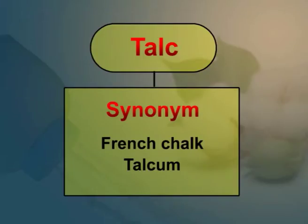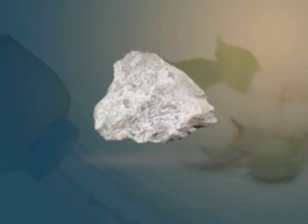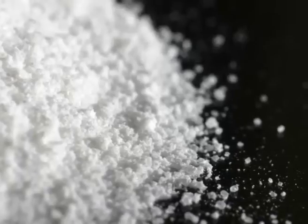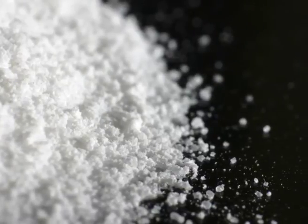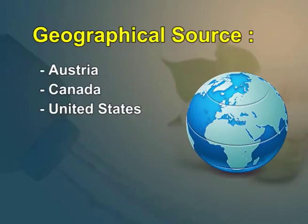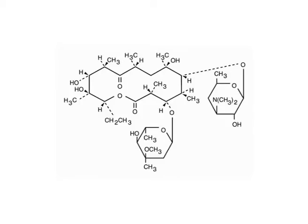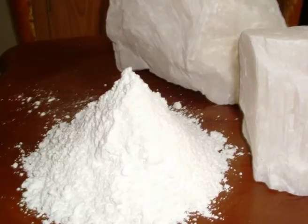Synonyms: talc is also called as French chalk or talcum. Source: it is a mineral with perfect cleavage and soapy feel which occurs as foliated to fibrous masses and sometimes in a coarsely granular, finely granular or cryptocrystalline masses. Geographical source: it is found in Austria, Canada, United States, California, Texas, France and Italy. It is a foliar which is slightly flexible and is not elastic. It has a perfect basal cleavage. Talc is very soft and sectile in nature with a hardness of 1.